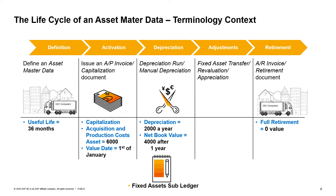Retirement is the removal of an asset or part of an asset from the asset portfolio. There are two ways to retire a fixed asset: by AR invoice if you are selling the asset, or by a retirement document if there is no customer involved and you need to write off the fixed asset. After the asset is fully retired, its value in the asset balance sheet account in the fixed asset sub-ledger will be registered as zero. Note that in the retirement document there is an option for a partial retirement — the asset will hold the remaining value until the end of the item's useful life.